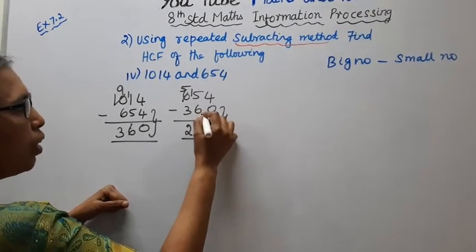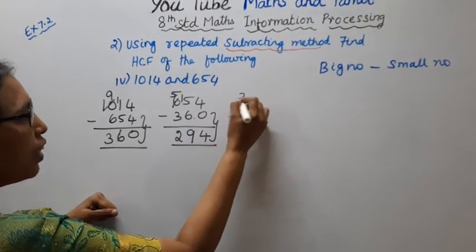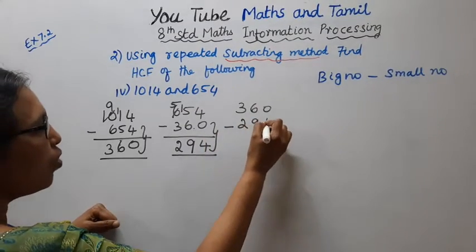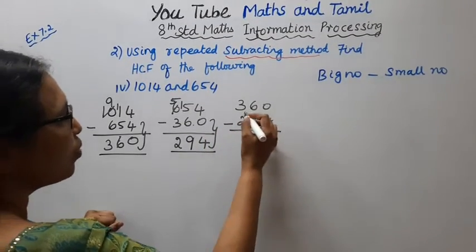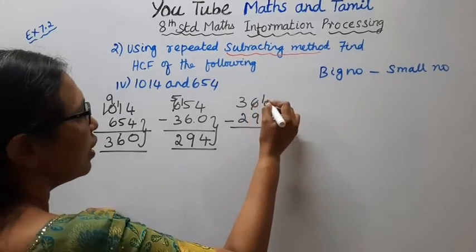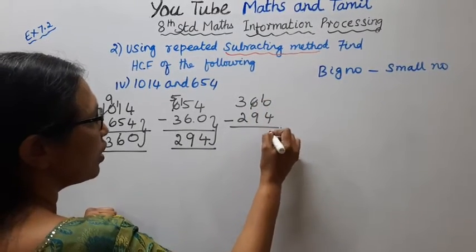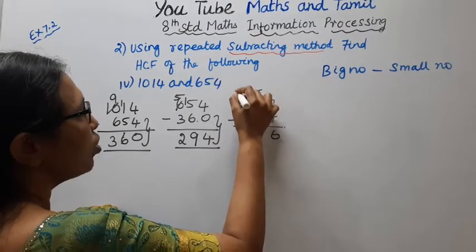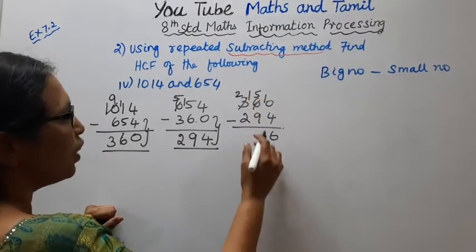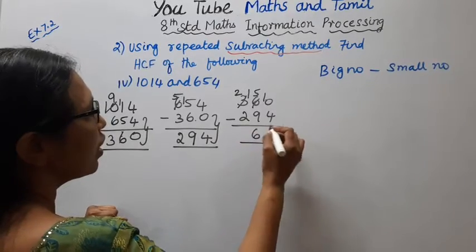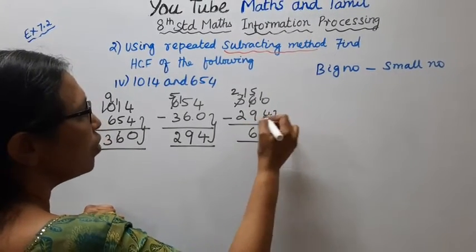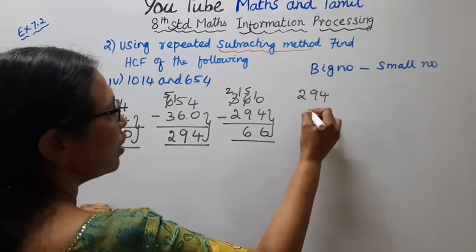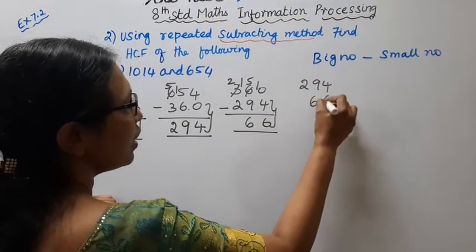Now we write this number. This number is 360 minus 294. The next period number is 294, and the next number is 66.